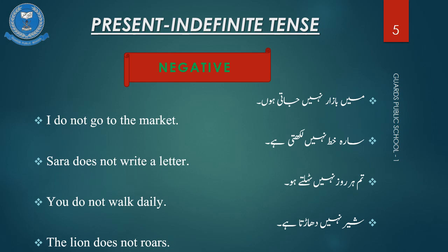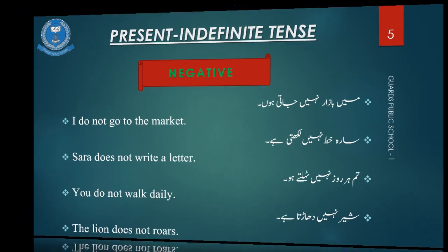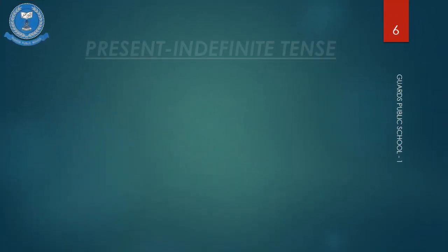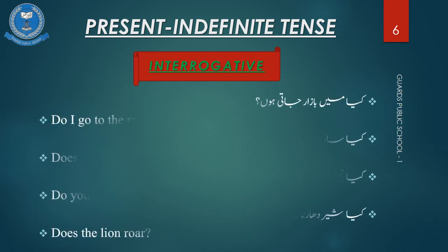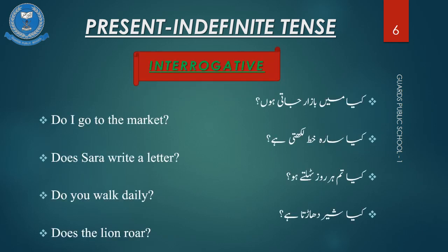You have already learned where you have to put 'do' and where you have to put 'does' in lecture number 3. Now let's move to the interrogative sentences — the same pattern we have to follow.